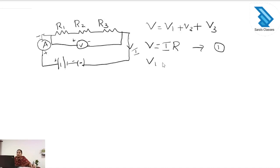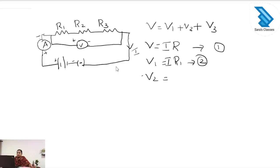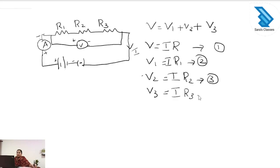Next we have to find the value of V1. The current through resistor R1 is I and the resistor is R1, so V1 equals I times R1 — this is equation 2. Next V2: the current is I and the resistor is R2, so V2 equals I times R2 — equation 3. Next V3: the current is same but the resistance is R3, so V3 equals I times R3 — equation 4.